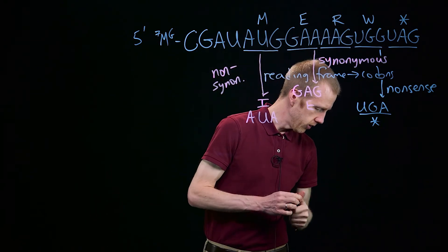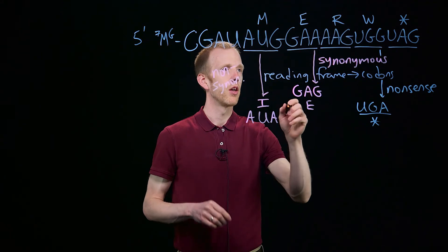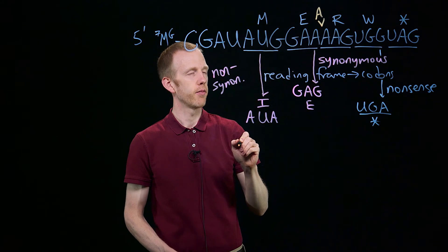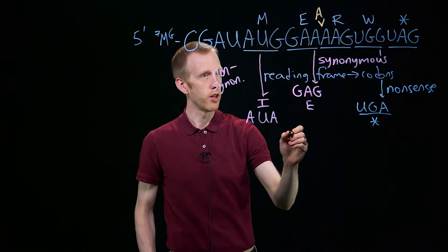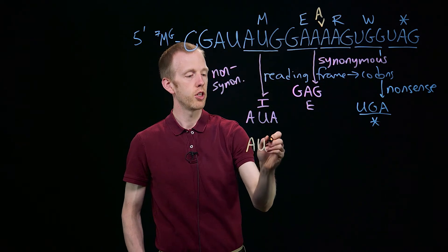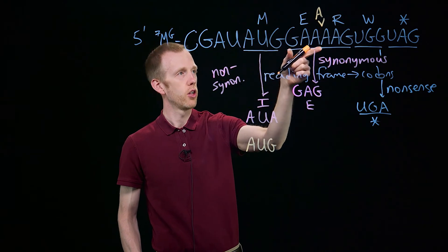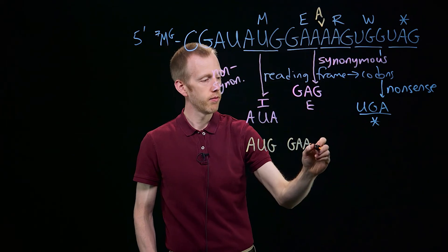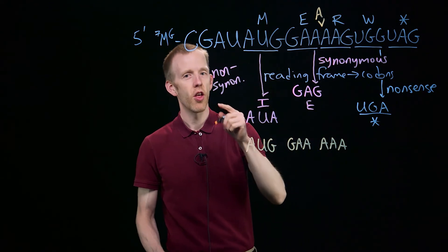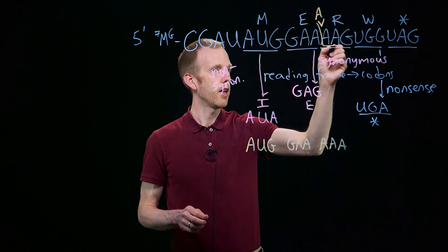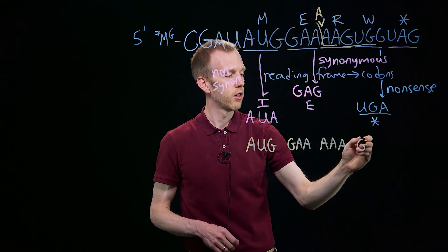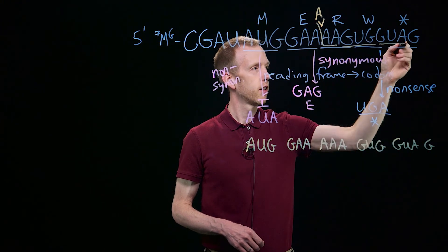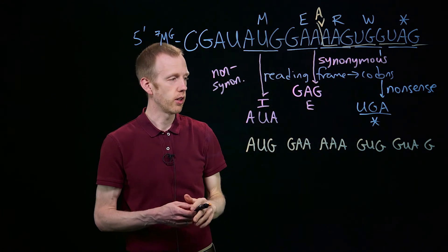The last one to look at is a frameshift mutation. So what happens if I add an A right there? This is going to be a frameshift. So now we still have AUG, that's where the ribosome is going to start reading, GAA, but now we have the next three nucleotides are AAA. We've shifted the reading frame. AAA, now we have GUG, GUA, and a G, and some other nucleotides potentially, that would continue being translated.